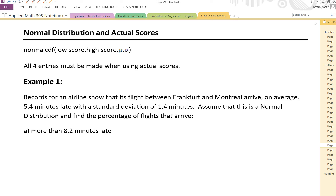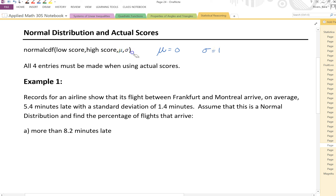In this lesson, we're going to look at normal distribution in actual scores. We're going to be using normal CDF again, where we have a lower score, the higher score, and then the mean and the standard deviation. But remember, in our last lessons, we've been dealing with Z-scores, so our mean has been 0 and our standard deviation has been 1. This is not the case when we're dealing with actual scores. We're going to look for the mean and the standard deviation in the question.